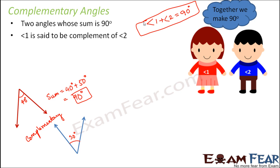And what do we say? We call angle one is said to be complement of angle two. So basically, we say it like this, angle one is complement of angle two or angle two is complement of angle one.